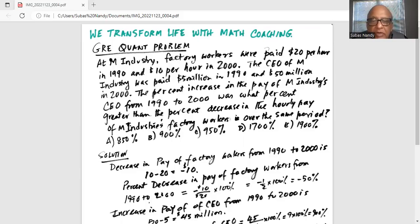First we will work with the factory workers. Decrease in pay of the factory workers from 1990 to 2000 is 10 minus 20. 10 is the salary in 2000 and 1990 salary was 20. So 10 minus 20 is minus $10.